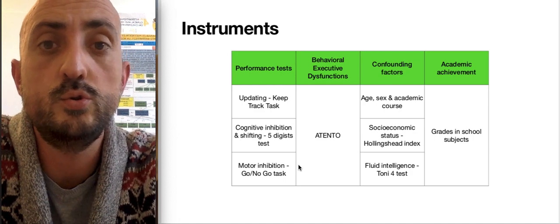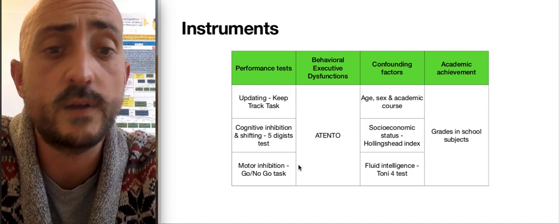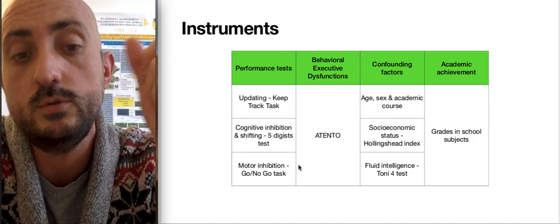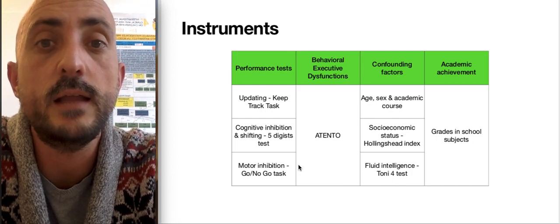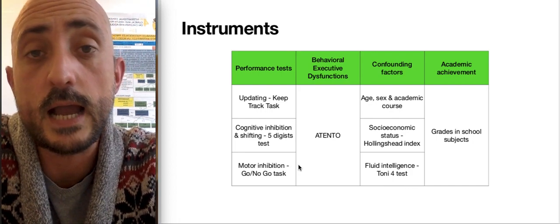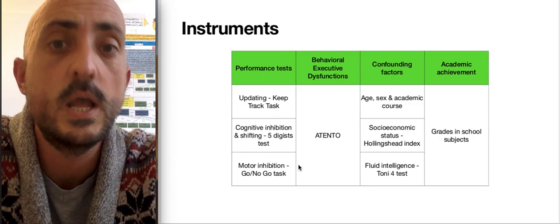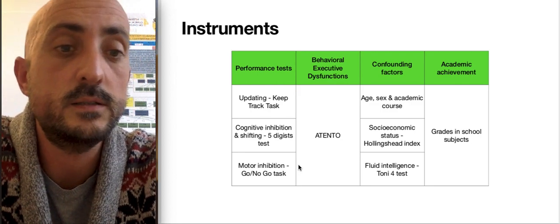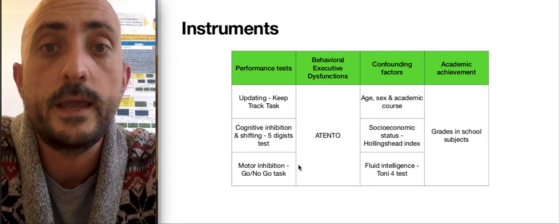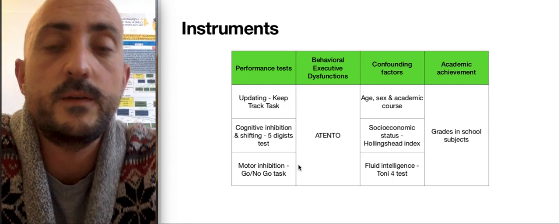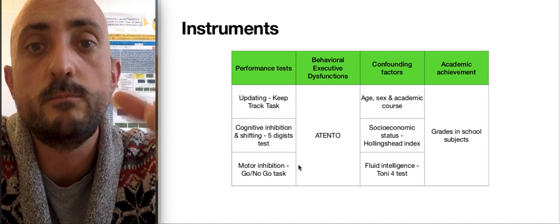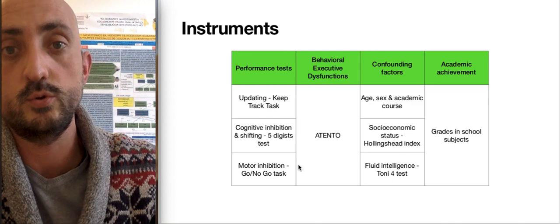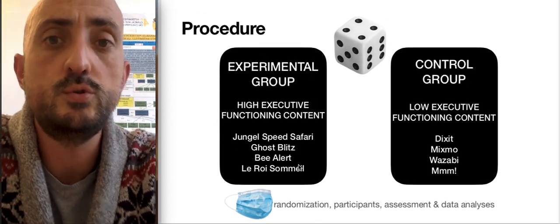We also want to assess different confounding factors such as age, sex, the academic course, socioeconomic status and fluid intelligence, because they are significant in this kind of studies of cognitive interventions. And we also want to assess if we can find far-transfer effects to academic achievement in order to test if children that play modern board and card games can improve their academic achievement compared to the other ones.